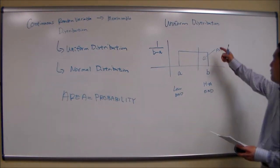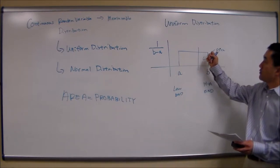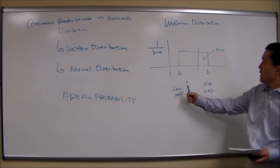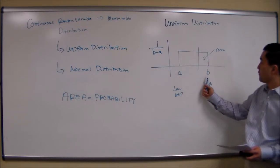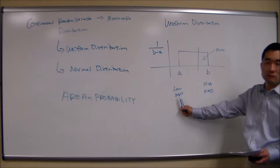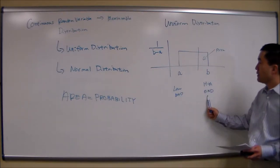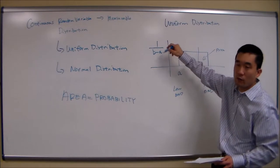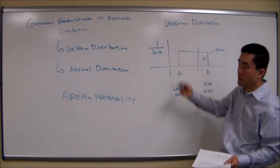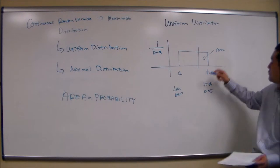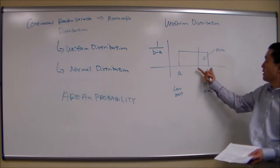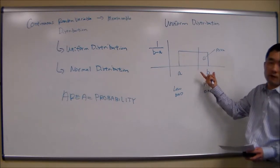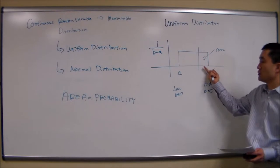Moving on to uniform distribution — the shape of this uniform distribution is typically a rectangle. It's defined with 'a' representing the lower end and 'b' representing the higher end. To find the height, the formula is 1 over (b minus a), so basically 1 over high end minus low end. We'll use this to figure out the area of the rectangle, which is the same as the probability.